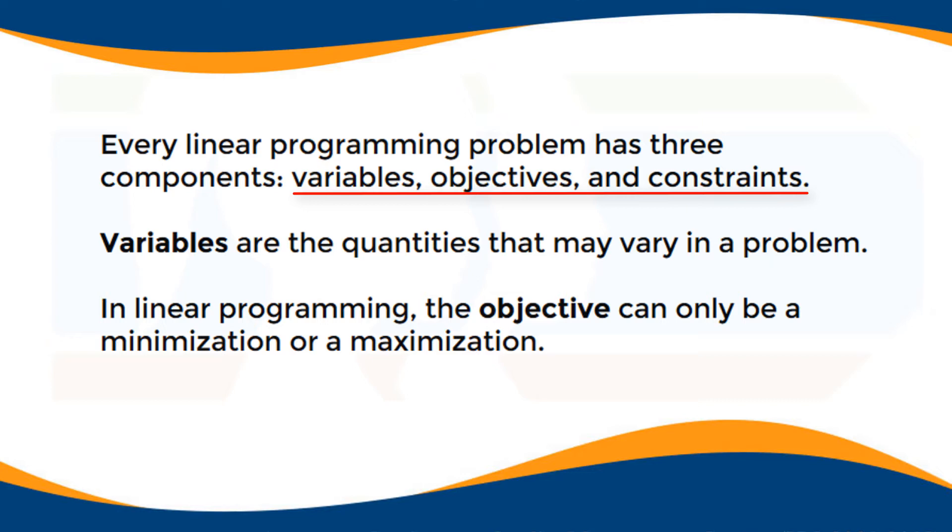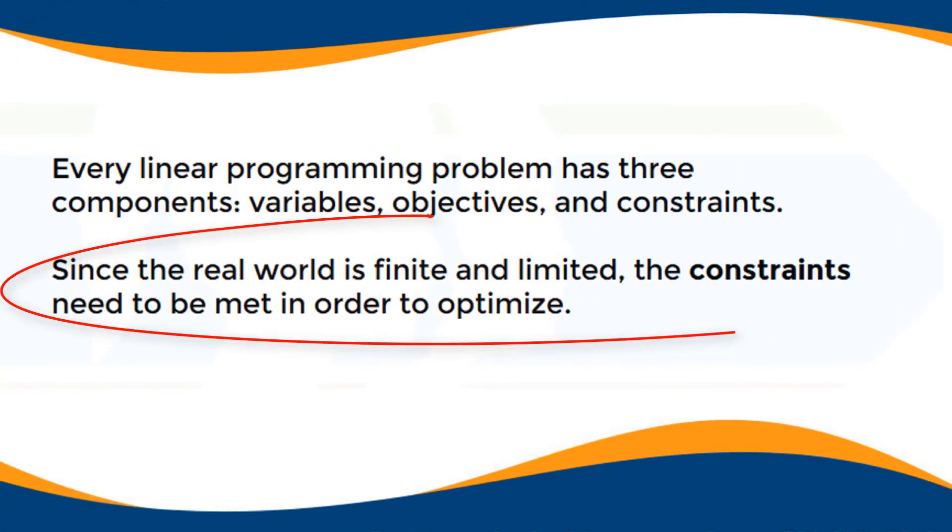In linear programming, the objective can only be a minimization or a maximization. Since the real world is finite and limited, the constraints need to be met in order to optimize.